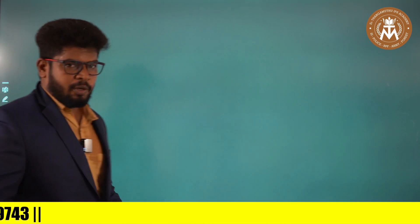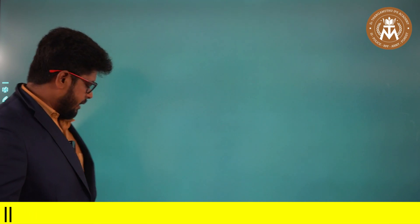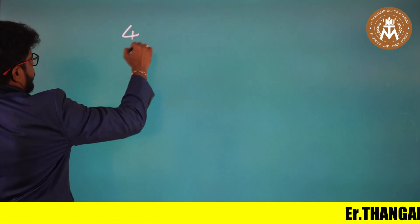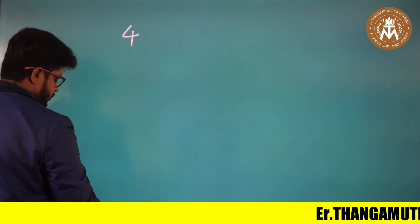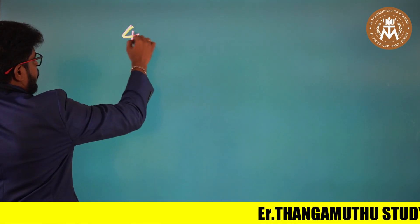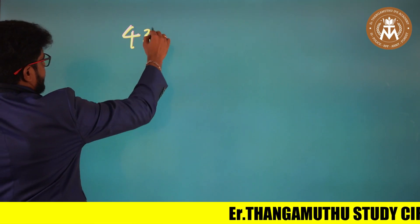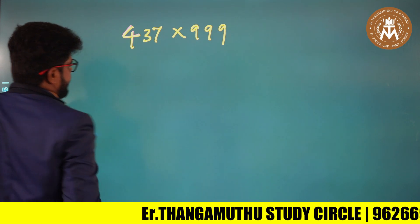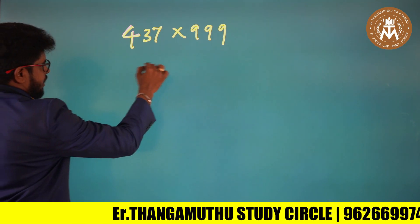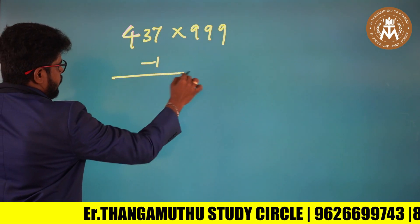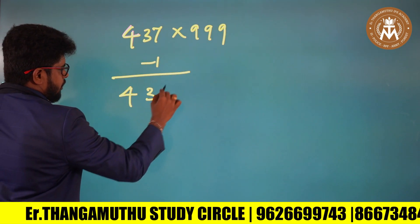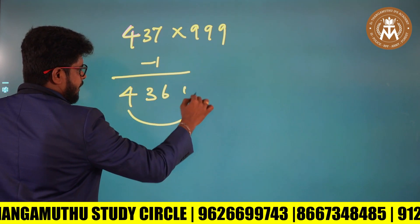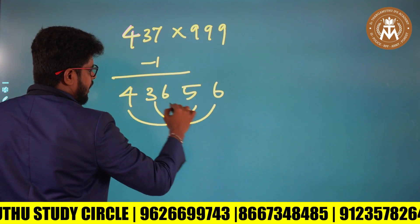Now 3-digit numbers. We can do this for your practice question: 4, 37 into 9, 9, 9. We have the same logic — minus 1. 4, 37 minus 1 is 4, 36. Then 4, 1, minus 1 is 5 — 36.